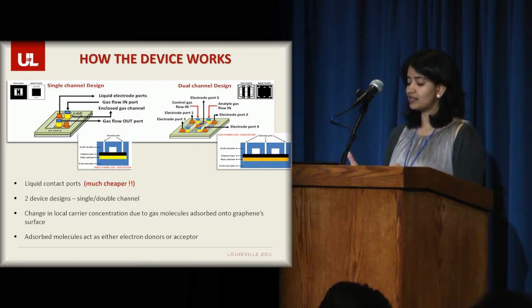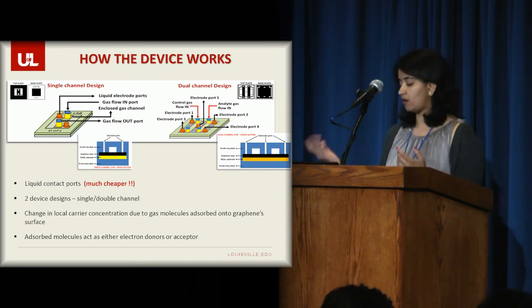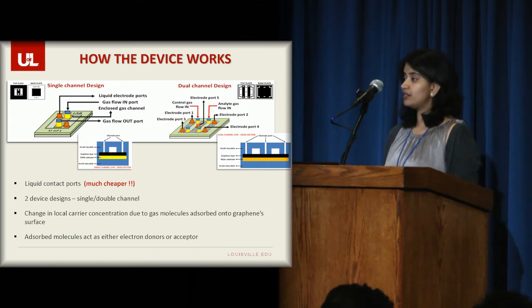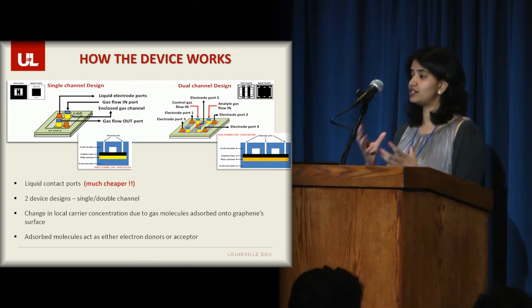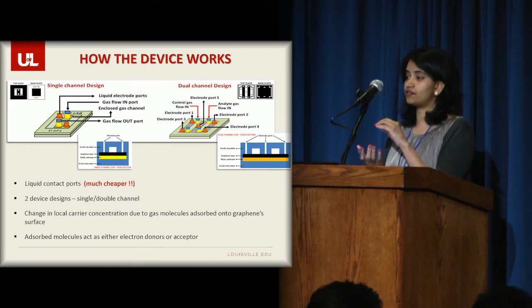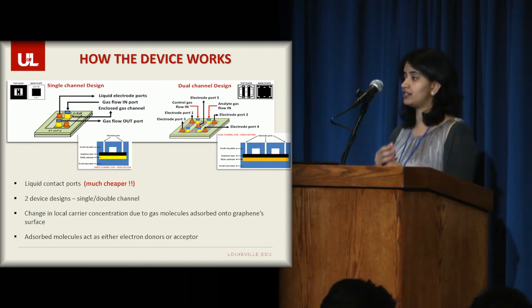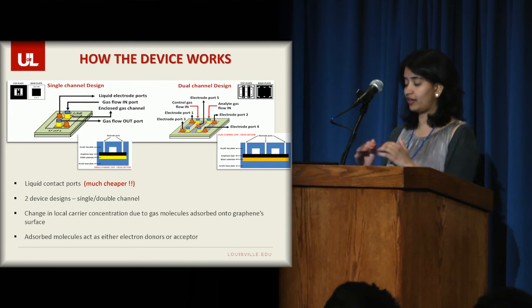So when you have the gas that flows through the gas channel, you have these gas molecules that absorb onto the graphene surface. So what happens is these molecules act as either electron donors or acceptors. This changes the local carrier concentration for the graphene layer. And this in turn changes the conductivity or the resistance of the graphene layer.